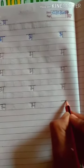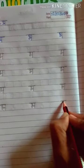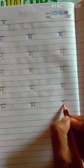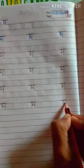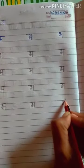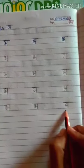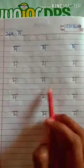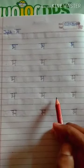Draw sleeping line upside. Then draw a small circle. Then draw a standing line. Then draw lapker. Then draw sleeping line. Then draw standing line. Which letter is this? This is letter Bha.